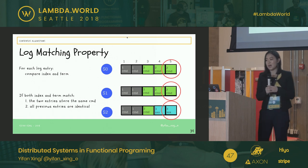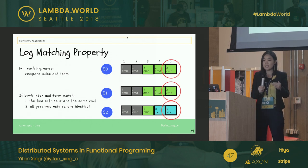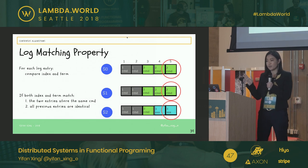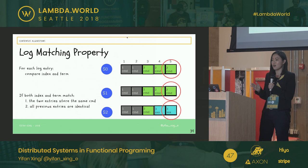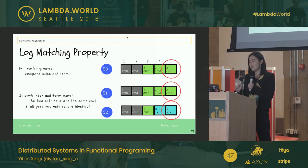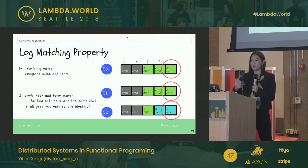Because of this repair mechanism, we have the log matching property in Raft. If two log entries at the same index have the same term, you can assume two things: the two entries store the exact same command, and all previous entries prior to this current entry are exactly the same. For example, if server zero and one both have term two at index five, everything is the same up to entry five. But if two servers have different terms at the same index, we cannot assume the log entries match.